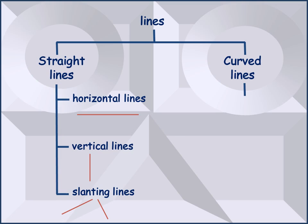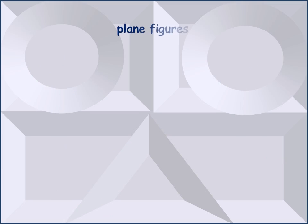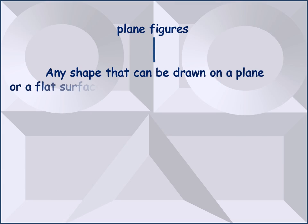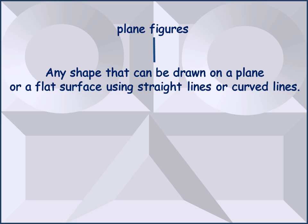Curved lines can curve to the left, to the right, upwards, downwards, or diagonally. As defined earlier, plane figures are any shape that can be drawn on a plane or a flat surface using straight lines or curved lines.